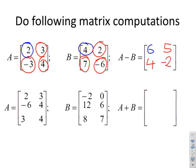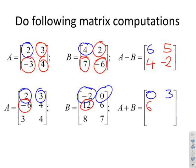What about the next one? This is a bit longer. In the 1,1 position, 2 and -2 adds to 0. Then 3 and 0 adds to 3. Next row: -6 and 12 adds to 6, then 4 and 6 adds to 10. The final row, 3 and 8 adds to 11.